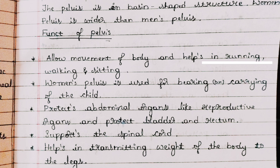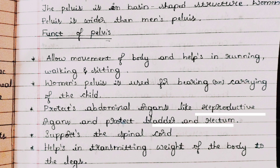The common functions of the pelvis — used in both male and female — are running, walking, and sitting. In females specifically, the pelvis is also used in carrying the baby. In the pelvic region there are many vital organs like reproductive organs, bladder, and rectum, all of which are protected by the pelvic bone. The pelvis also supports the spinal cord to stay in its position and not collapse.